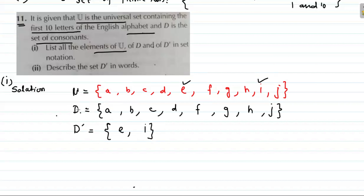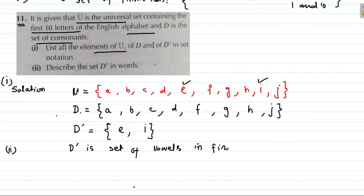U minus D means we take all U elements and remove D's elements — a, b, c, d, f, g, h, j are all removed. That completes part one. For part two, describe the set D' in words: D' is the set of vowels in the first ten letters of the English alphabet.